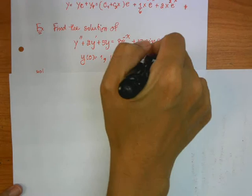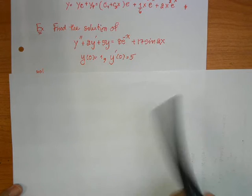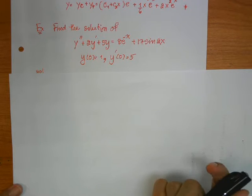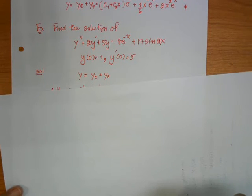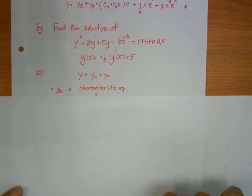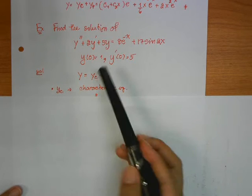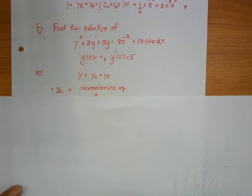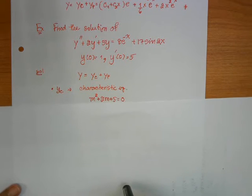Because this is a non-homogeneous differential equation, your solution is combined with yc and yp. To find yc, you write down the characteristic equation. The characteristic equation of this differential equation is m squared plus 2m plus 5 equals 0.